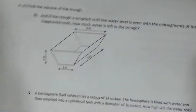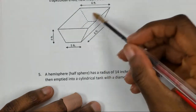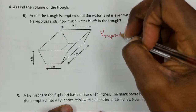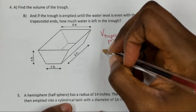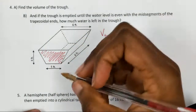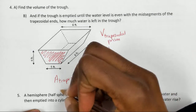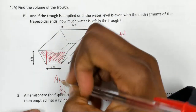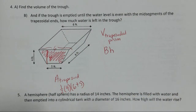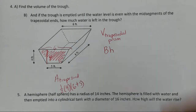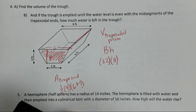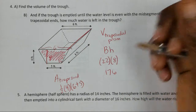Find the volume of the trough. This is a trapezoidal prism — it has the same cross-section on both ends. The volume formula is BH, where B is the area of the trapezoid: one-half times height of 4 times (base 1 of 6 plus base 2 of 5). Half of 4 is 2 times 11 equals 22. Times the prism height of 8 gives 22 times 8 equals 176 cubic units for part A.